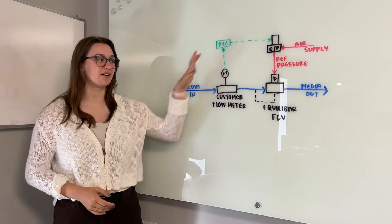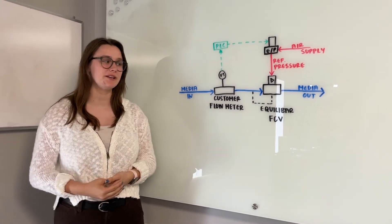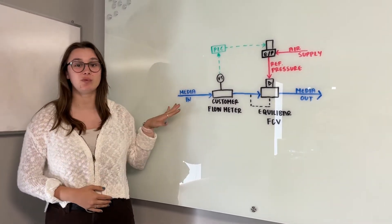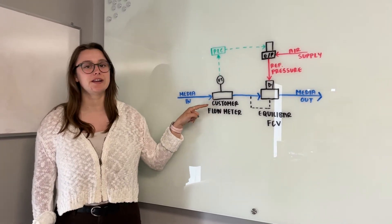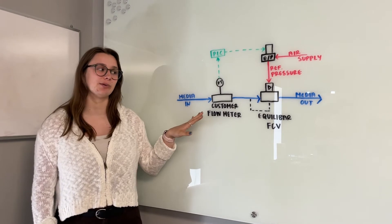Here's a schematic you can find on our getting started with flow control page. In our demonstration we will have water coming in at about 40 psi going through our flow meter, in this case an Endress+Hauser Promass 63.